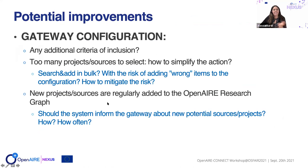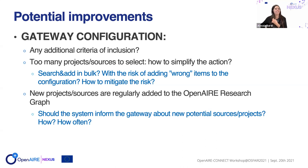Our experience shows that sometimes there are too many projects and data sources in one domain to select. We should find a way to simplify this action — maybe consider functionality to add things to the configuration in bulk. But we need to mitigate the risk of adding wrong items; for example, in the energy research domain, we couldn't add all projects with 'energy' in the name because that would include high energy physics projects completely out of scope. Also, new projects and sources are regularly added to the OpenAir Research Graph, so we should find a way to inform gateway creators about new potential sources.